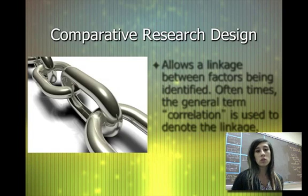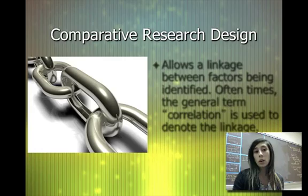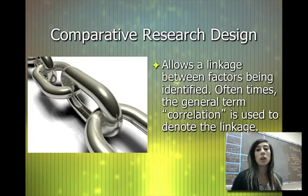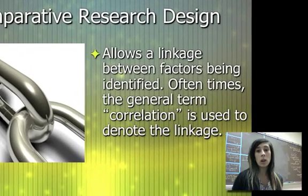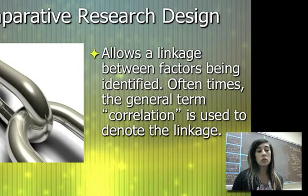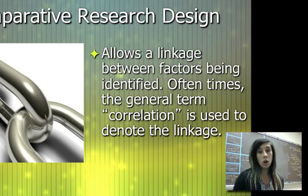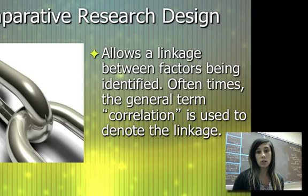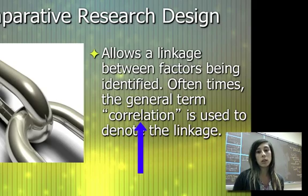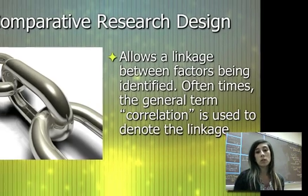Our second type of research design is called comparative research design. With comparative, you're essentially comparing two different factors and allowing yourself the chance to see if they are linked. If you do one thing, will something else occur? If something is this tall, will it weigh this much? We often use the term correlation to denote that there is a linkage.